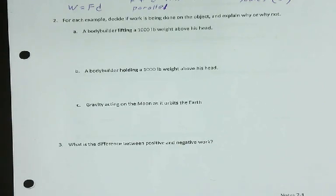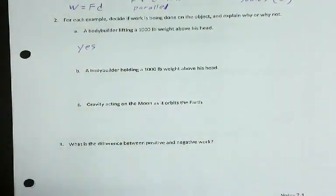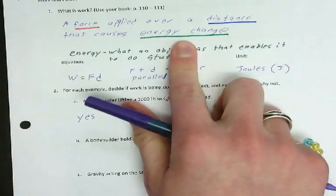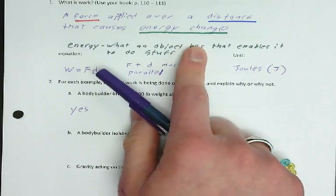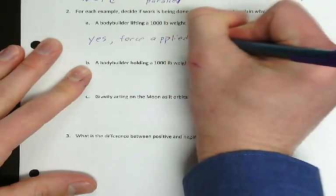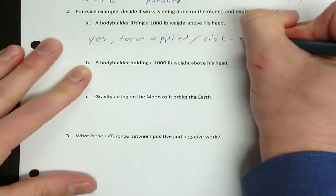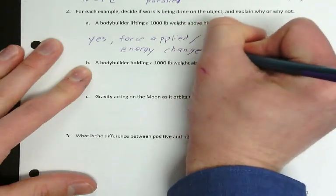So which of those is doing work and which is not? Example A — yes, they're doing work. The force is moving the weight and the distance is putting it above his head. That does change energy: it would hurt more to drop it on your foot when it's higher than when it's lower, so it has more energy when it's higher. Force applied, distance moved, energy changed — it did all three.